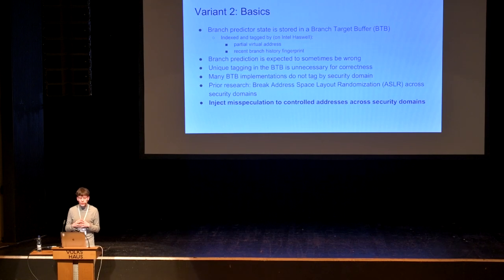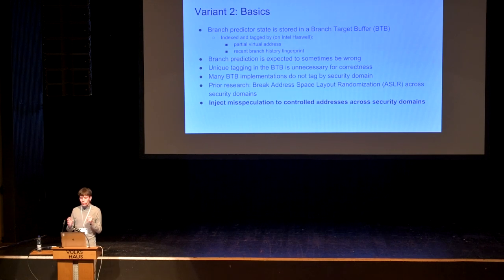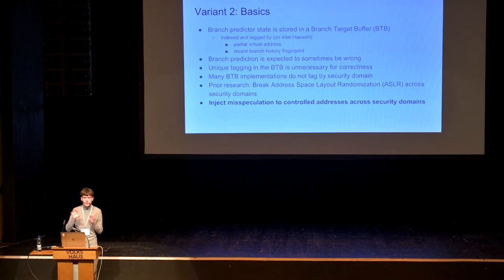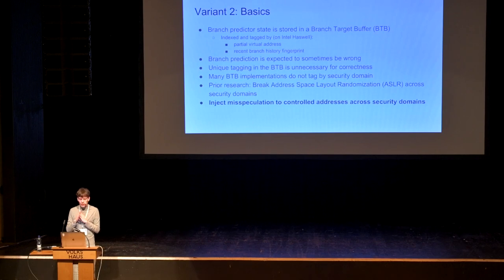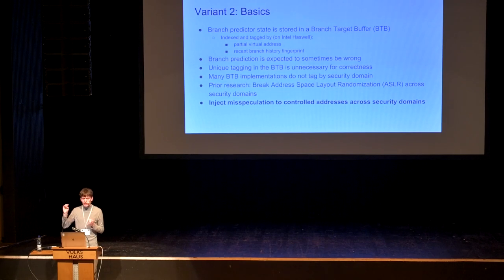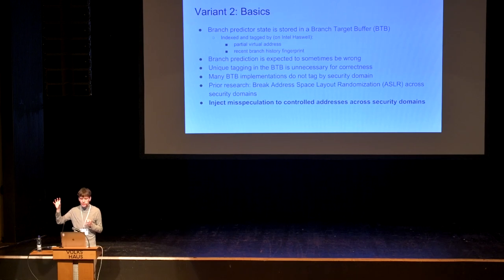The new thing here is that you can also do this the other way around: instead of using the branch target buffer to leak data from the victim to the attacker, you can use it to inject branches from the attacker into the victim. If you can insert entries into the branch target buffer, you can cause the target context to start executing transient instructions at, in some implementations, a completely controlled address.